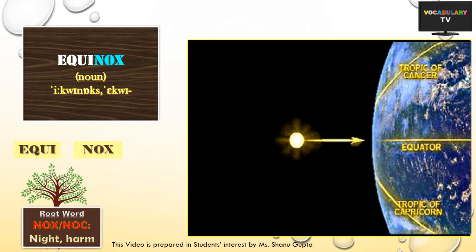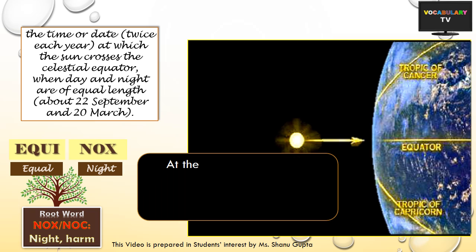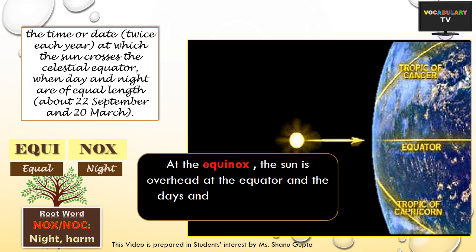The next word, equinox, is equally common. Made up of the prefix equi meaning equal and nox meaning night, the word literally stands for equal nights and refers to those dates when day and night are of equal length, which are about 22nd September and 20th March. At the equinox, the sun is overhead at the equator and that's why days and nights are of equal duration.